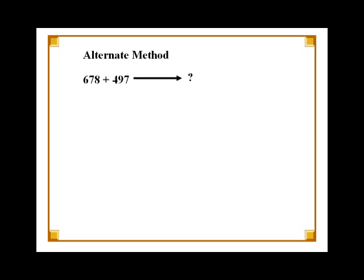There is an alternate method for performing addition quickly. Let us take the same problem. We can write 678 as 680 minus 2 and 497 can be written as 500 minus 3.